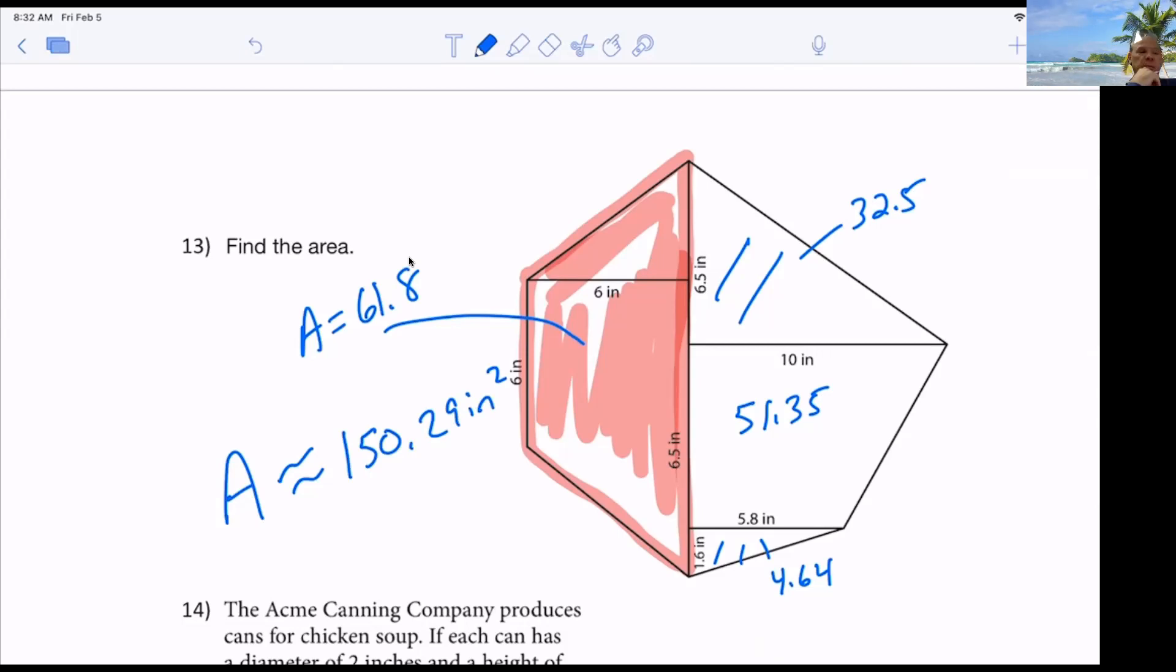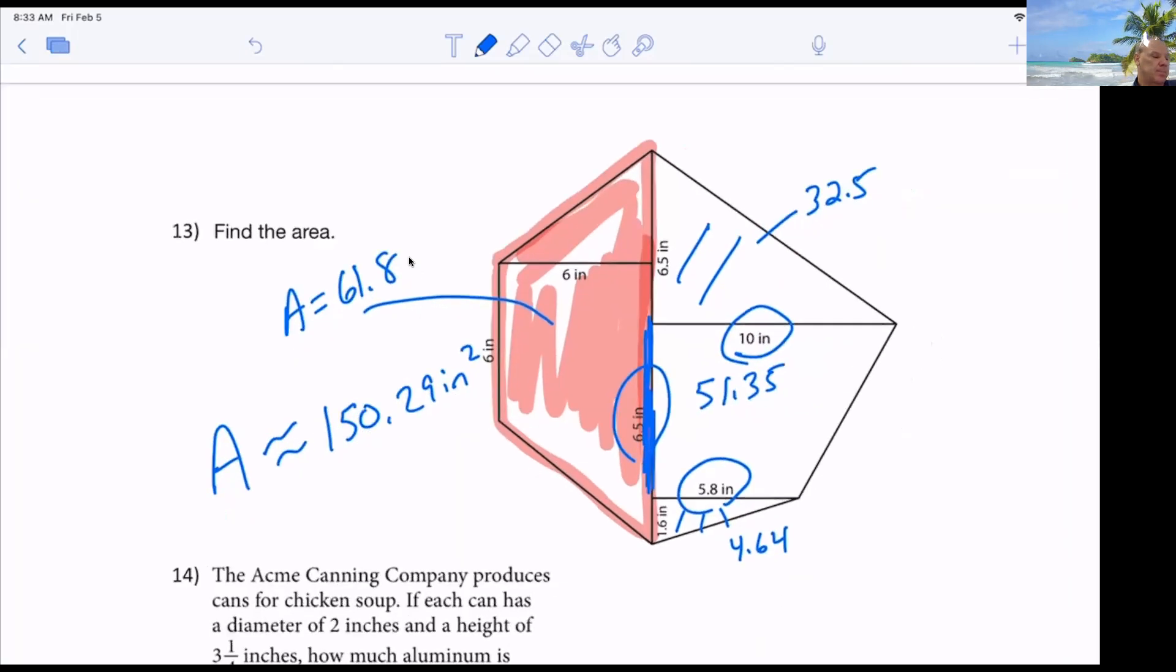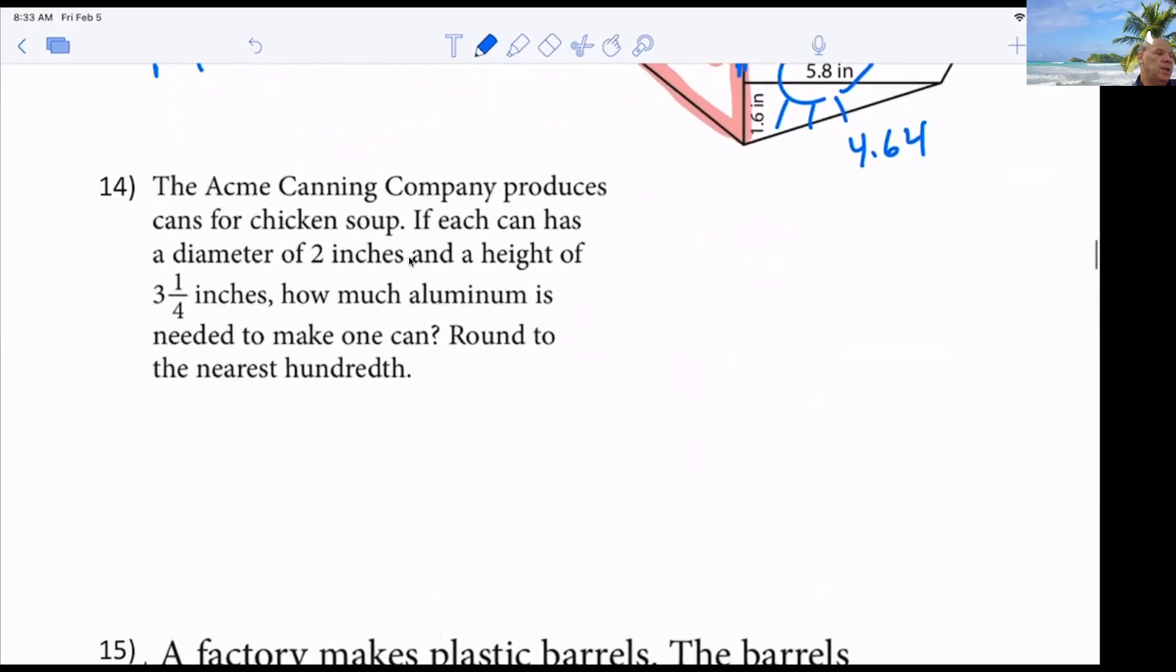The big trapezoid or the small? 10 plus 5.8 equals divided by 2 times 6.5. Well, I can't help that. 6.5 is from here to here. Okay.